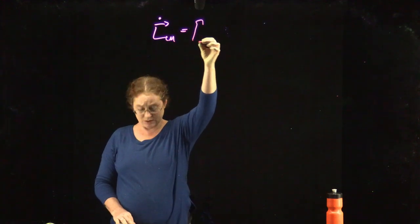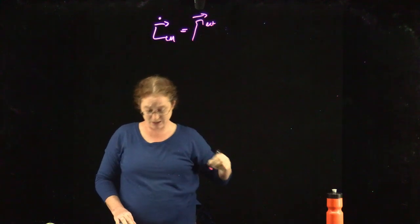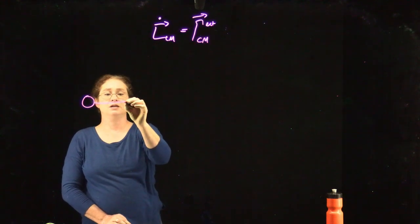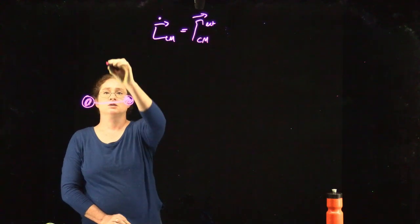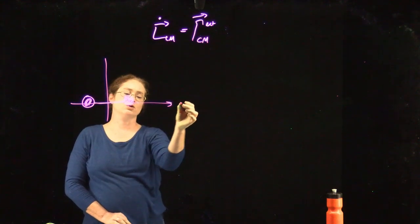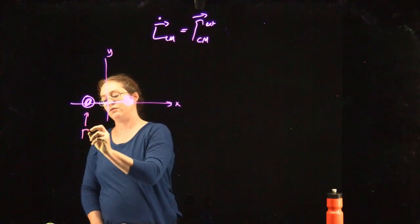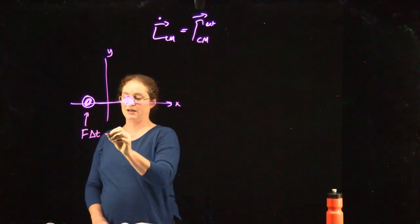We can also look at some more general applications. We talked about conservation of angular momentum about the origin, but there is also conservation of angular momentum about the center of mass if there are no external torques. So L-dot about the center of mass equals the sum of external torques about the center of mass. We can consider example 3.4: a dumbbell with the center of mass at the origin, whacked with a force F over a time T, giving it a momentum.